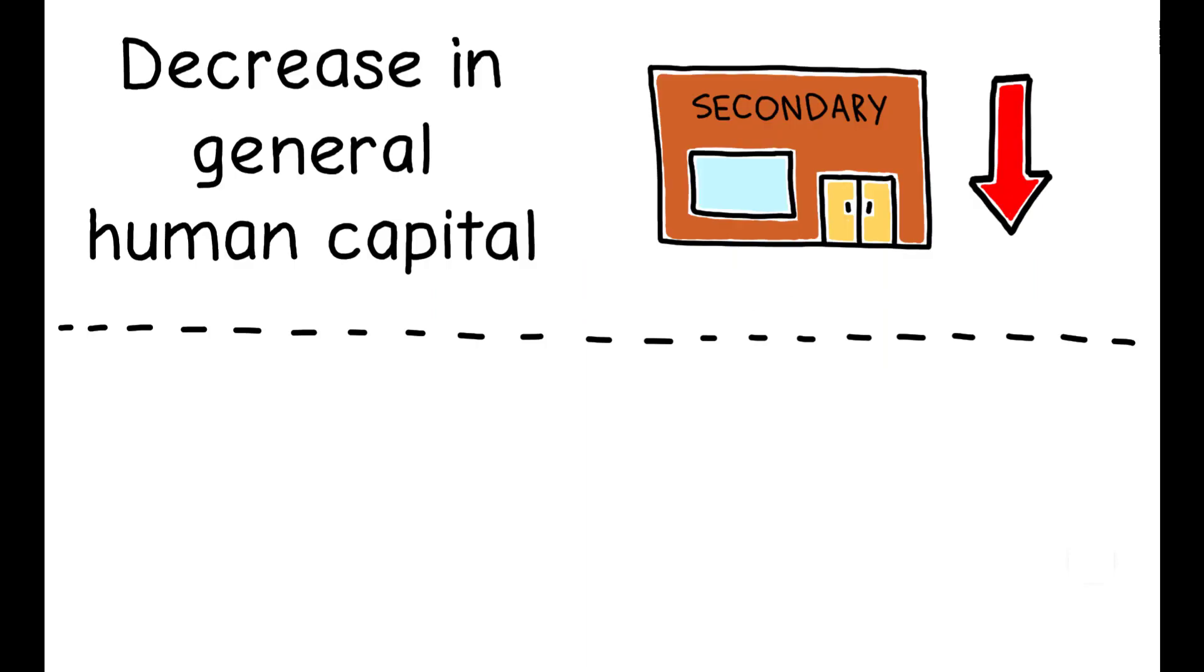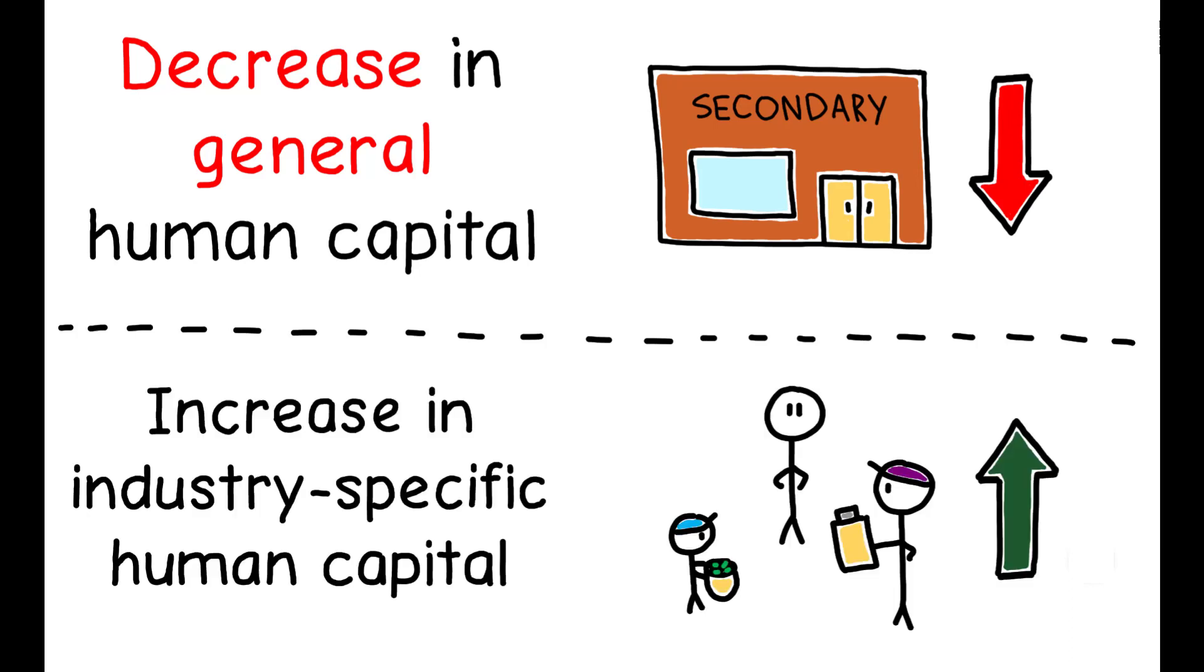Now, there are two potential mechanisms that could explain this result. On the one hand, children employed in the industry may have lower formal education and thus fewer job opportunities as adults. Alternatively, exposure at an early age may allow individuals to acquire expertise and contacts unique to the cocaine industry and thus pave their way forward in the drug trade.